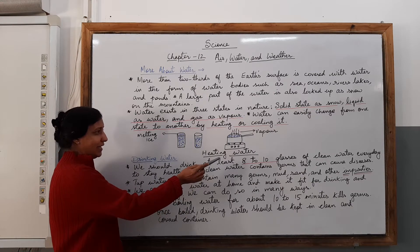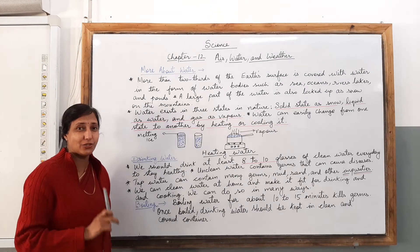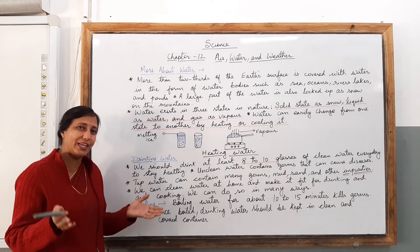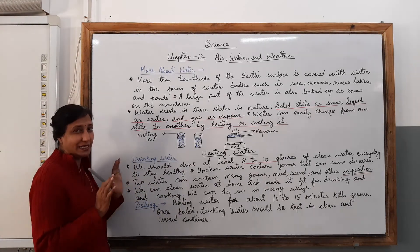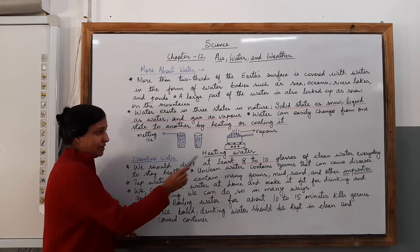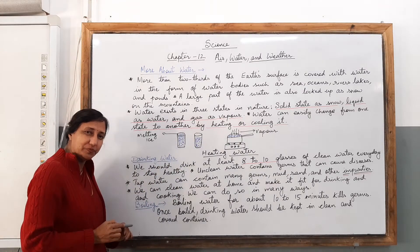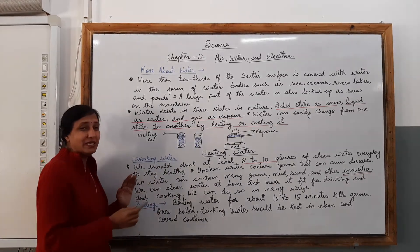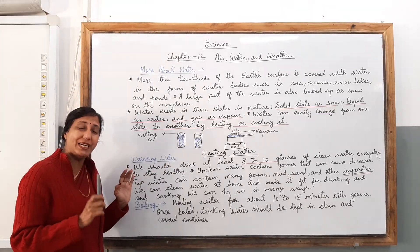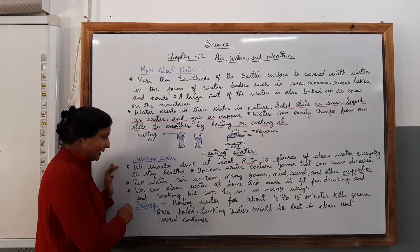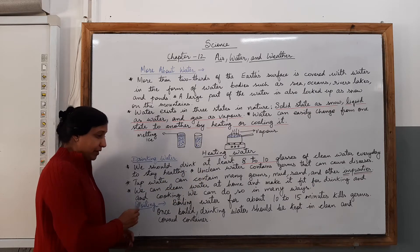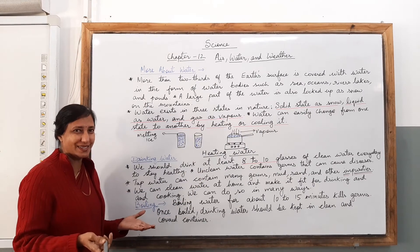Unclean water contains germs that can cause diseases. As I told you, all water bodies are not having water suitable for drinking, as it is not clean and contains some germs. Tap water can contain many germs, mud, sand, and other impurities. These things present in water which are not suitable for drinking are known as impurities. We can clean water at home and make it fit for drinking and cooking.